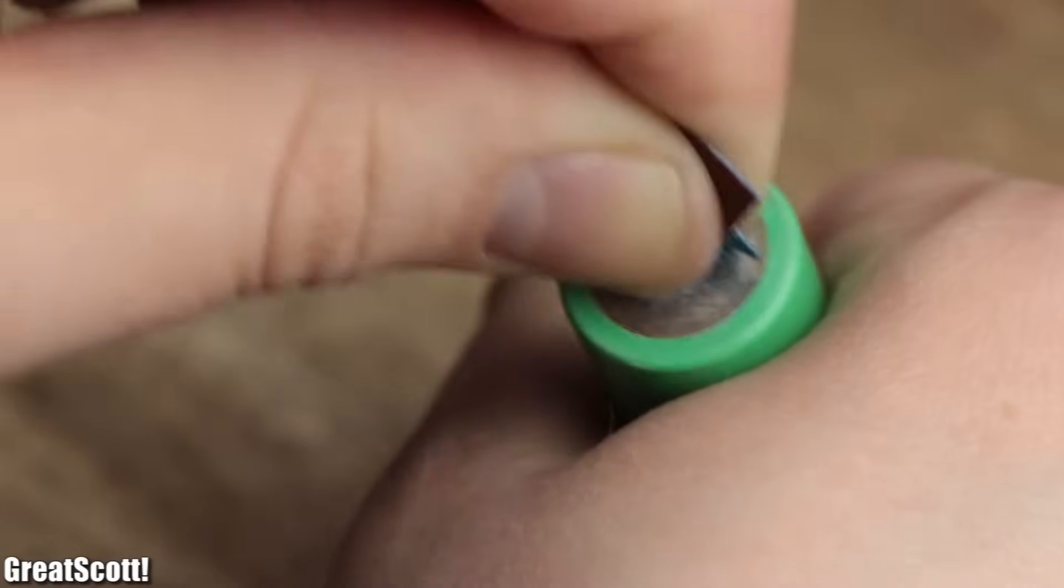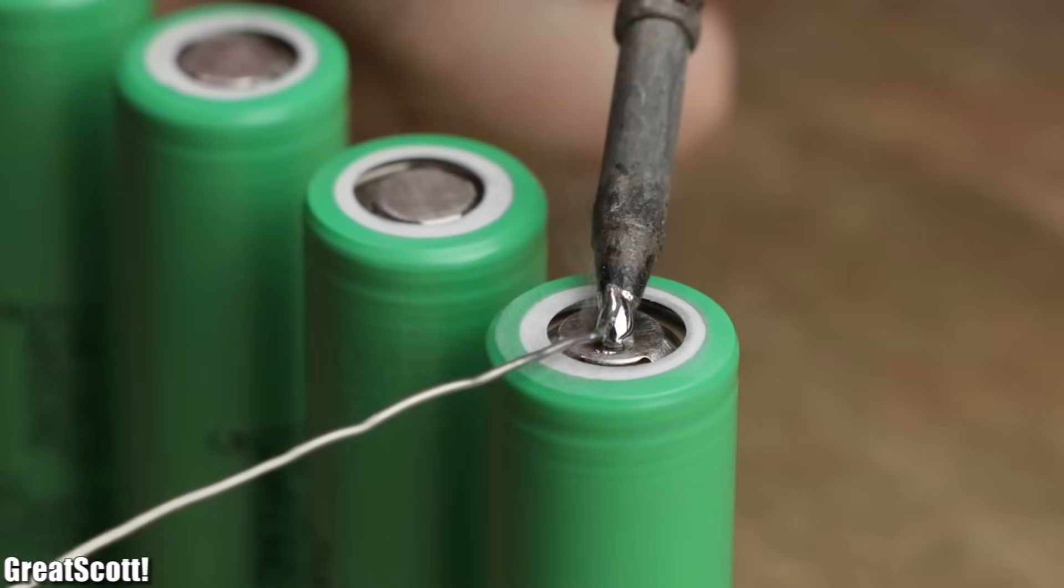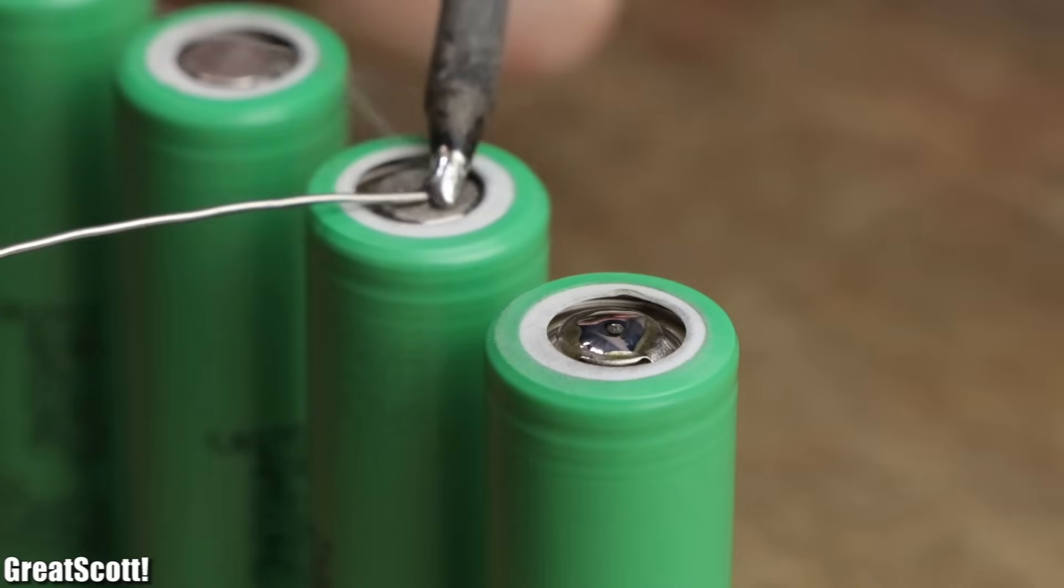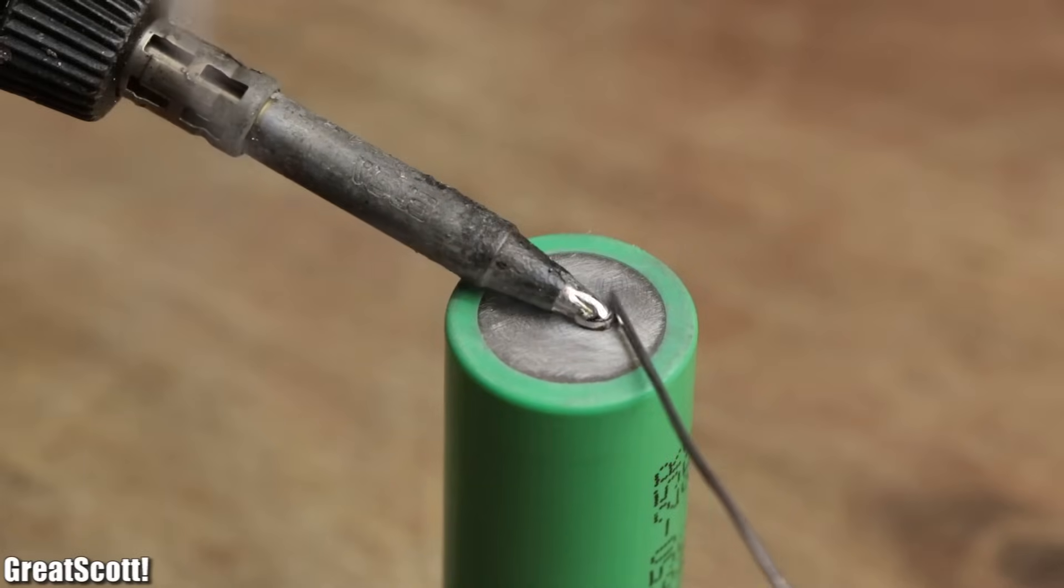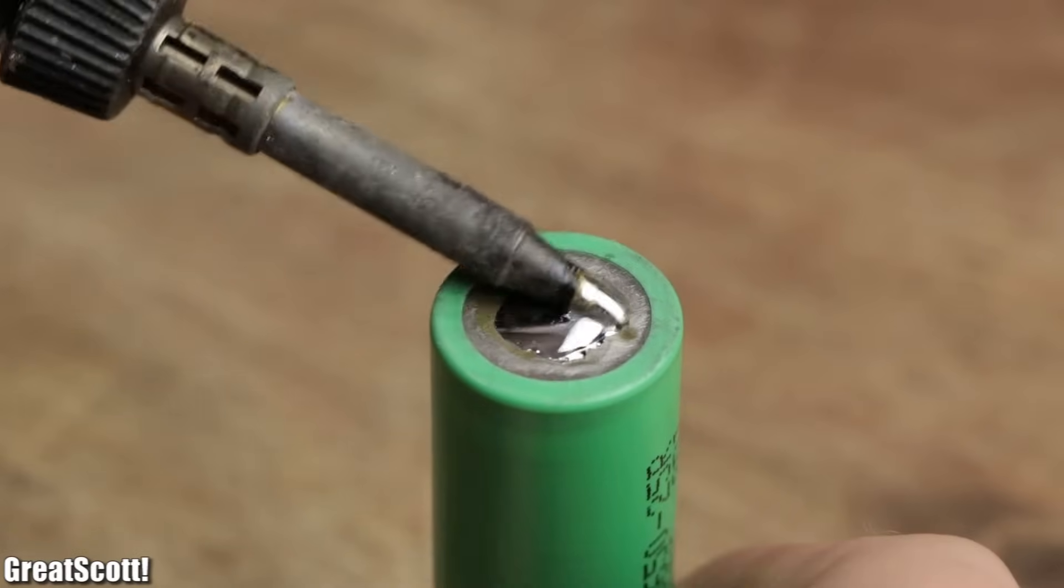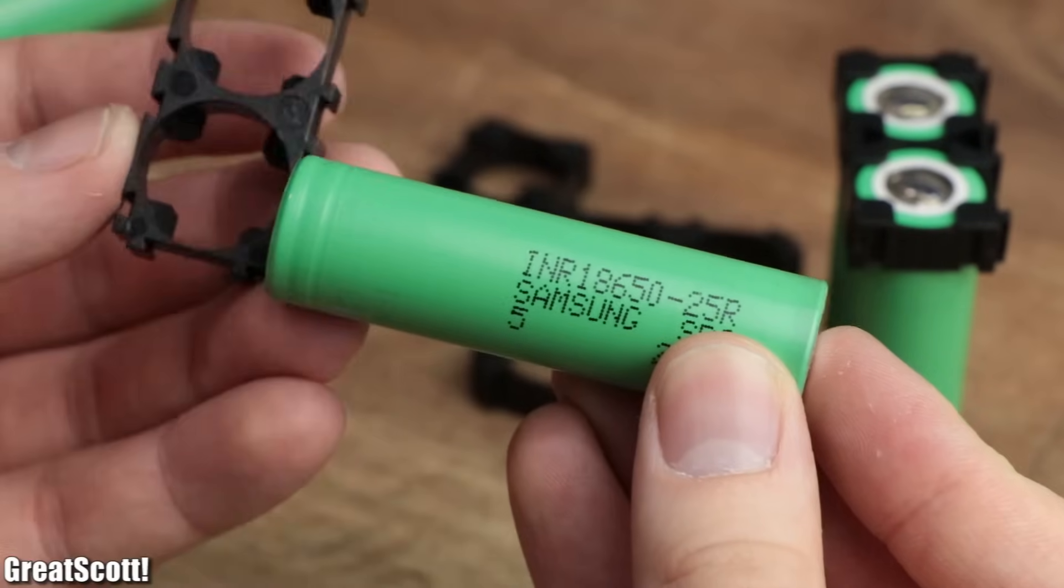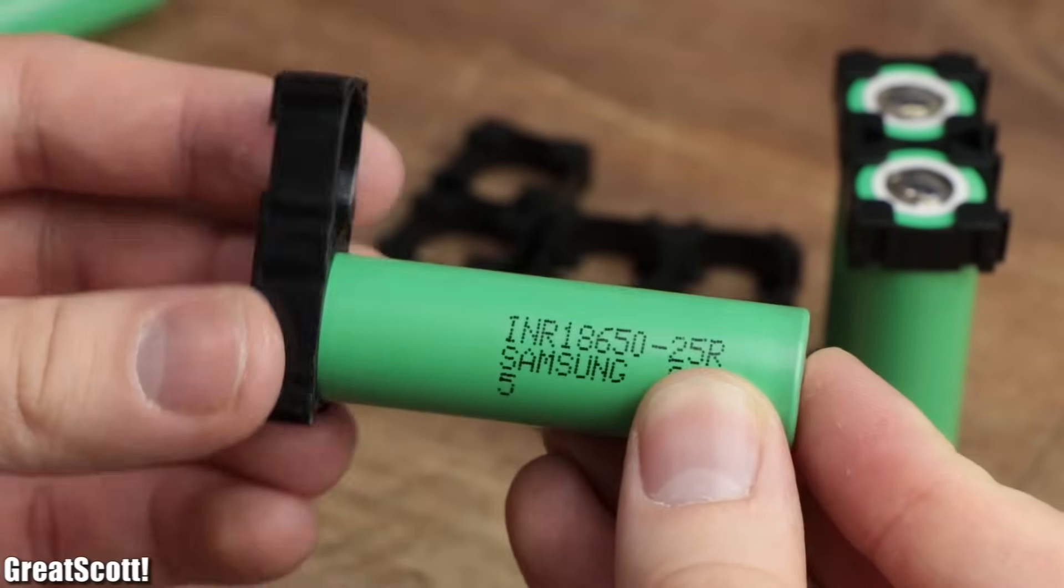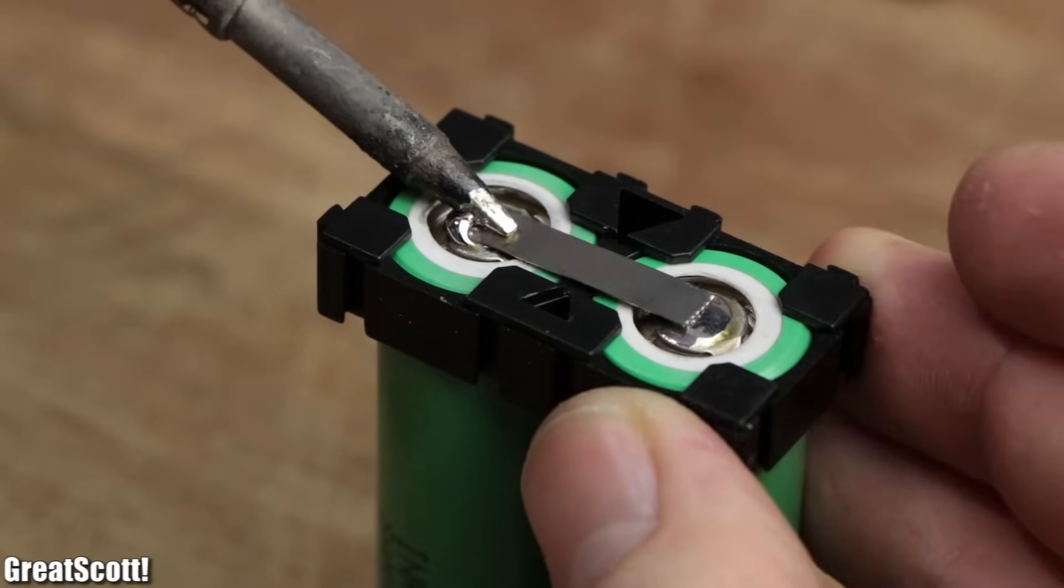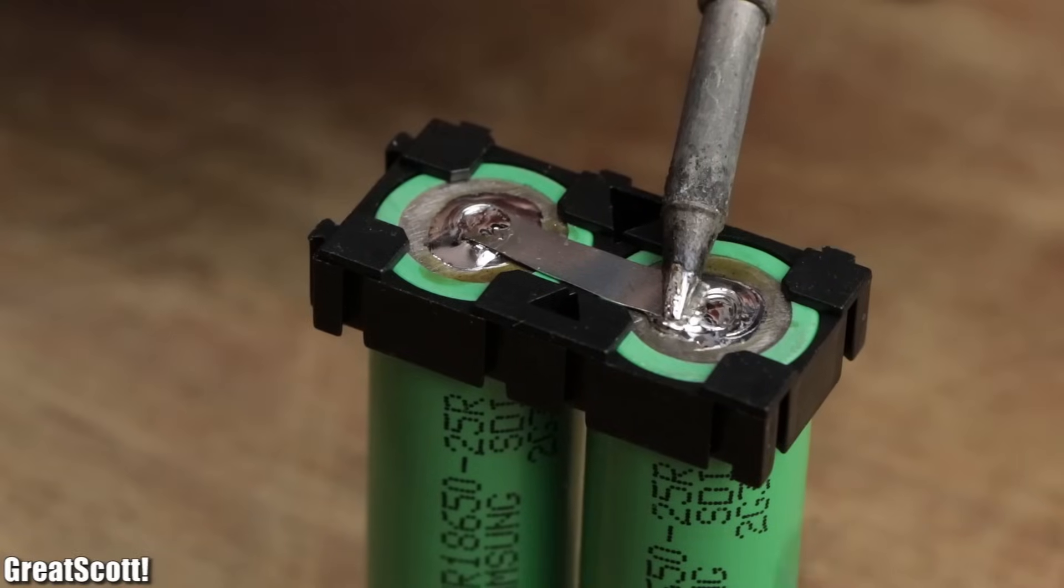Afterwards I added a bit of solder to each contact, which already shows you why this method is not recommended, because it heats up the battery which can lead to capacity losses and other problems. But nevertheless, I then inserted each battery pair into their designated spacers and use the previously created ribbon pieces to connect them in parallel.